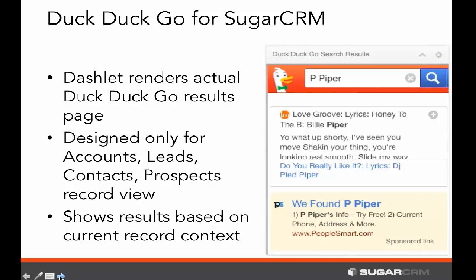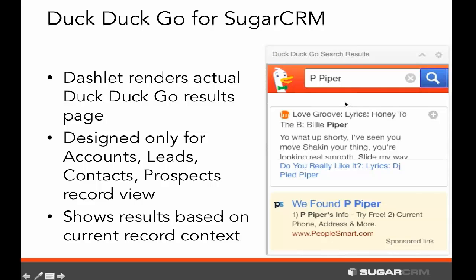Let's look at another example — a DuckDuckGo plugin for SugarCRM that I've created. It simply renders the DuckDuckGo results page in a dashlet. Since DuckDuckGo has a very responsive design, it fits nicely into the dashlet context. Since we're passing context from the record into the dashlet, we're restricting it to only work for certain modules — specifically accounts, leads, contacts, and prospects — and only for the record view, not the list view, since we're only passing one search criteria.